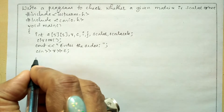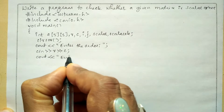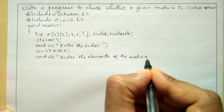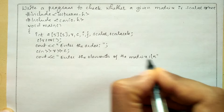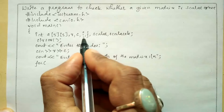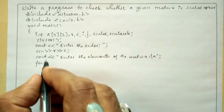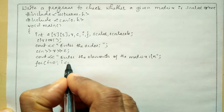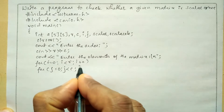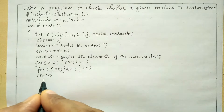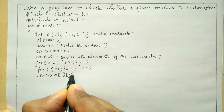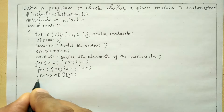Now we will ask the user to enter the elements of the matrix using the cout stream insertion operator: "Enter the elements of the matrix", followed by a backslash n to bring the cursor to the next line. Next I will use the iterative statement for, with i = 0, i less than row, i++; then the nested for with j = 0, j less than column, j++; and receive input into the 2D array a[i][j].